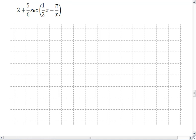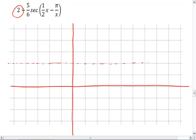For this one we have secant. Notice our vertical shifts out front. We're shifting up 2 units and we have an amplitude of 5 sixths. We're gonna go up to 2 and 5 sixths and down to 1 and 1 sixth.